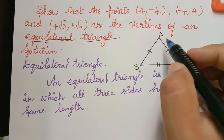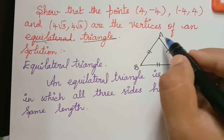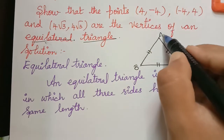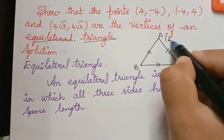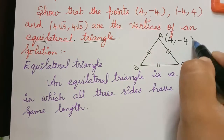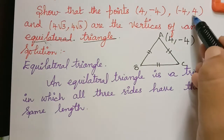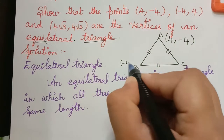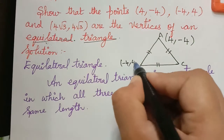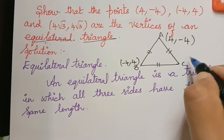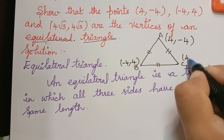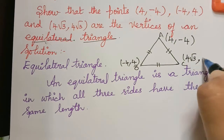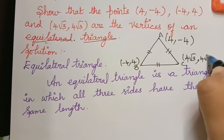Now let us choose the point A as (4, -4), the point B as (-4, 4), and the point C as (4√3, 4√3).